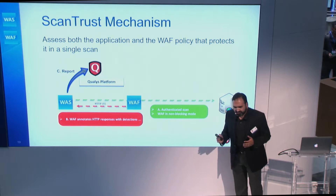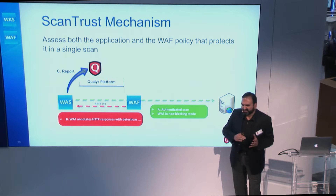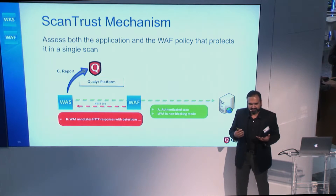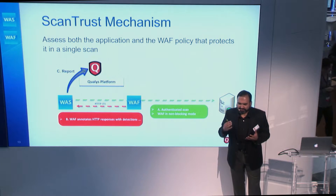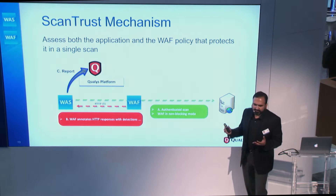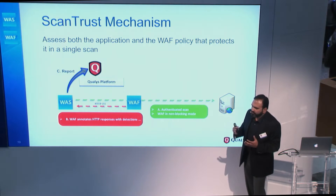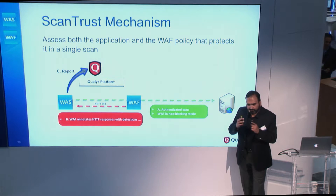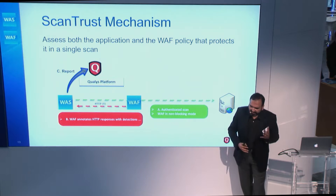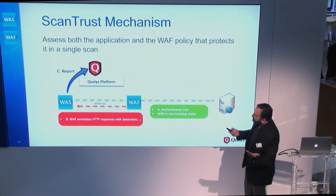The ScanTrust feature lets you deploy our WAF and use our scanner to test the security provided by our WAF. Our WAF will detect all requests coming from our scanner and will not block those requests. It will evaluate and tell you what action it would have taken if WAF were in blocking mode. If the WAF has the capability to block any of those attack vectors, they'll show up in the report with a little 'protected' sign next to them. So you can effectively deploy the WAF, test your web application, and test the security provided by your WAF in one single pass.